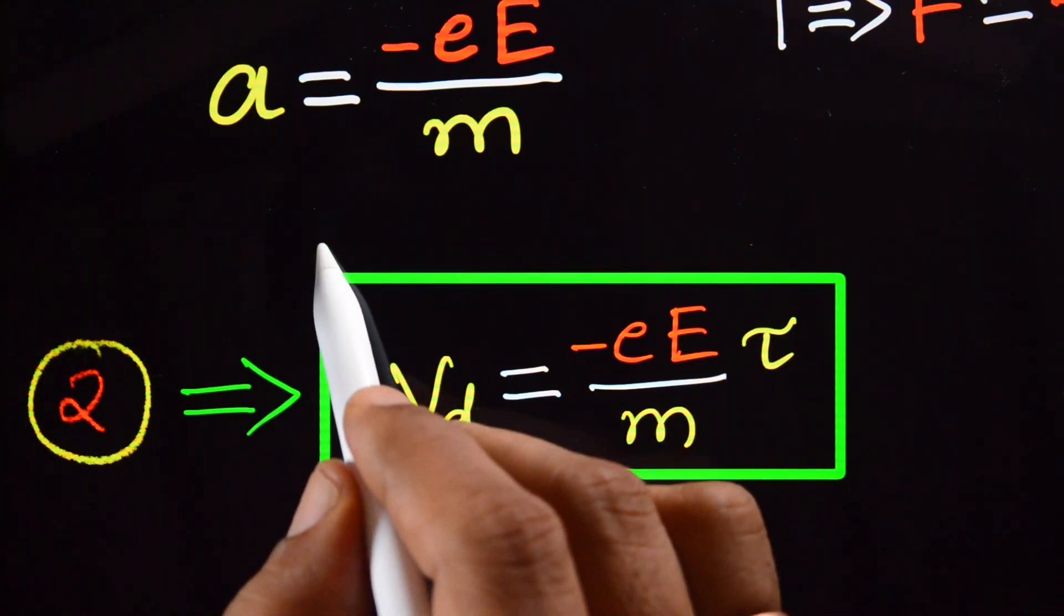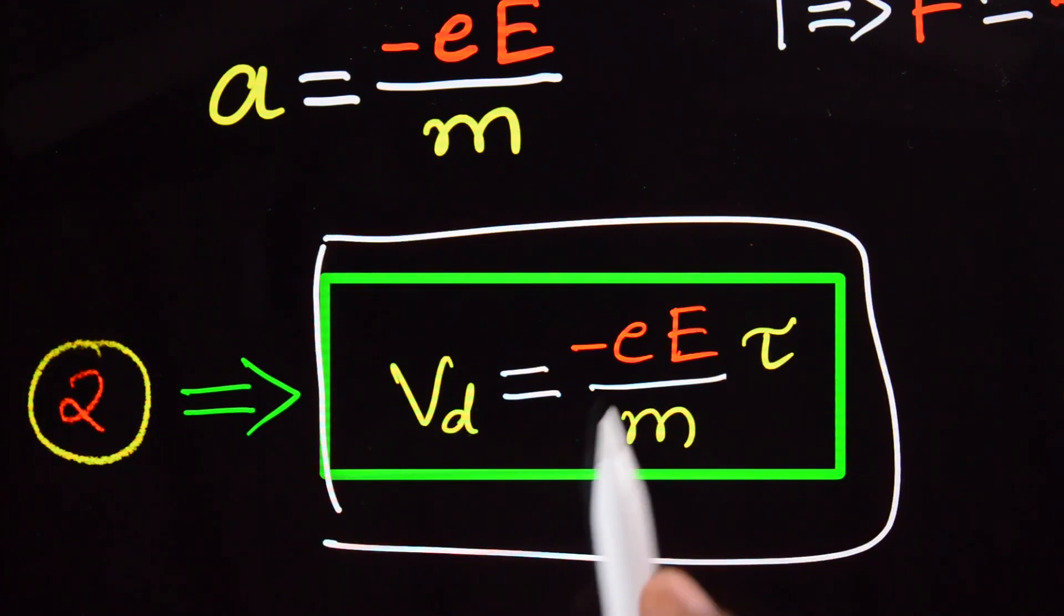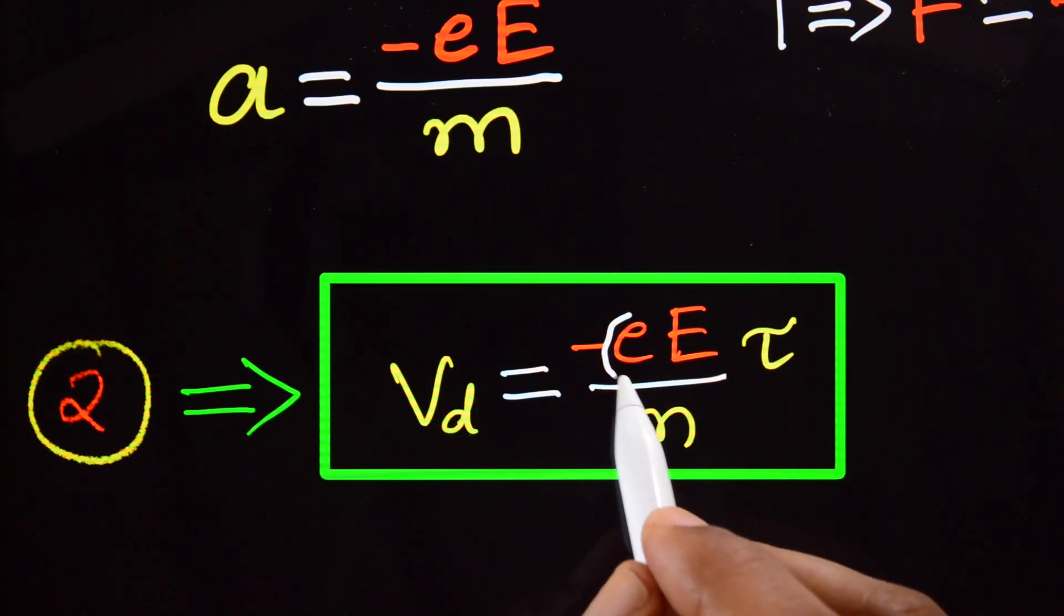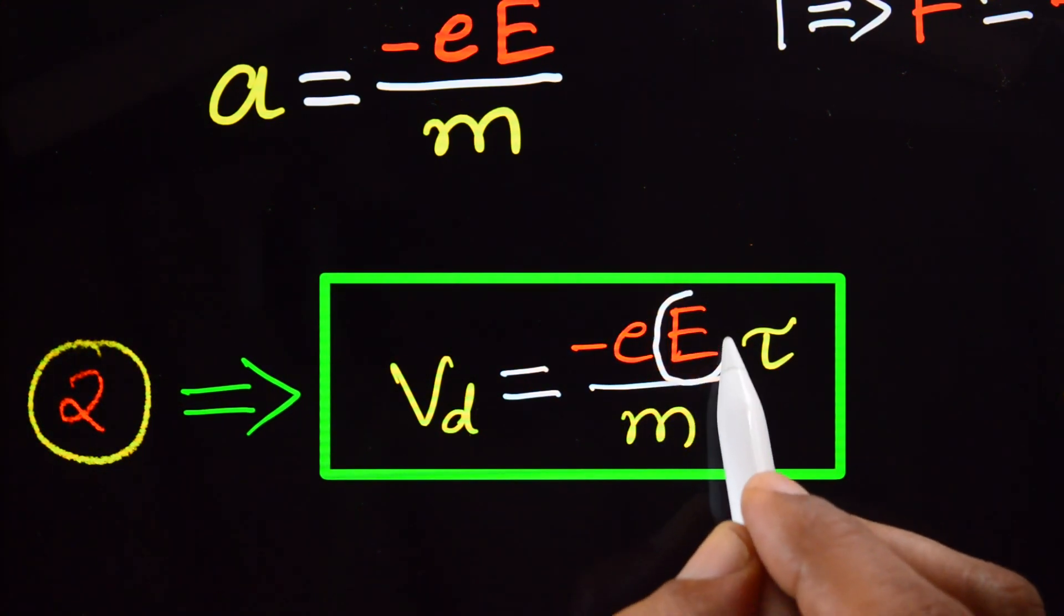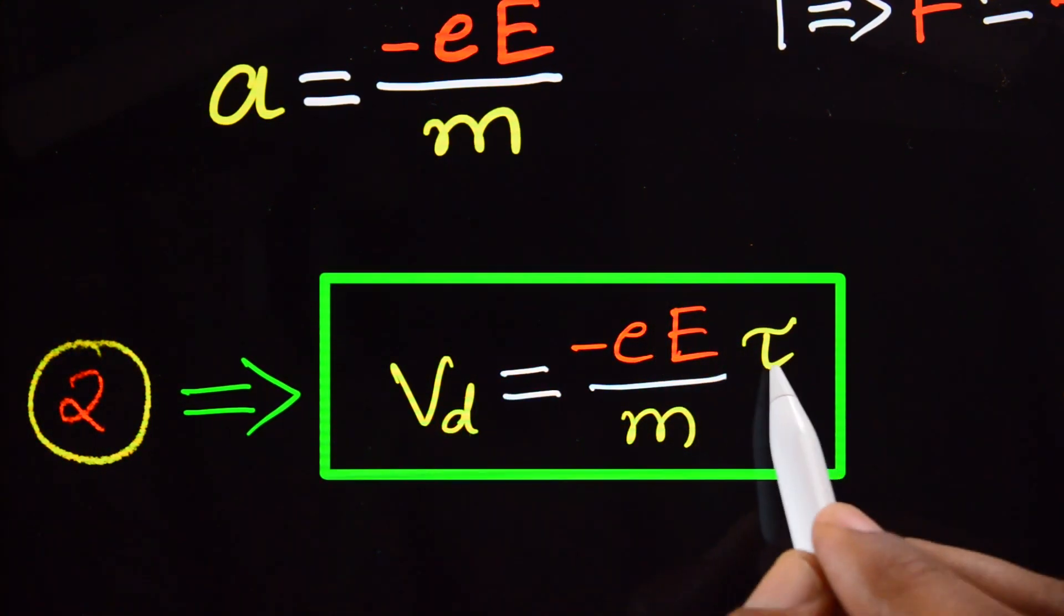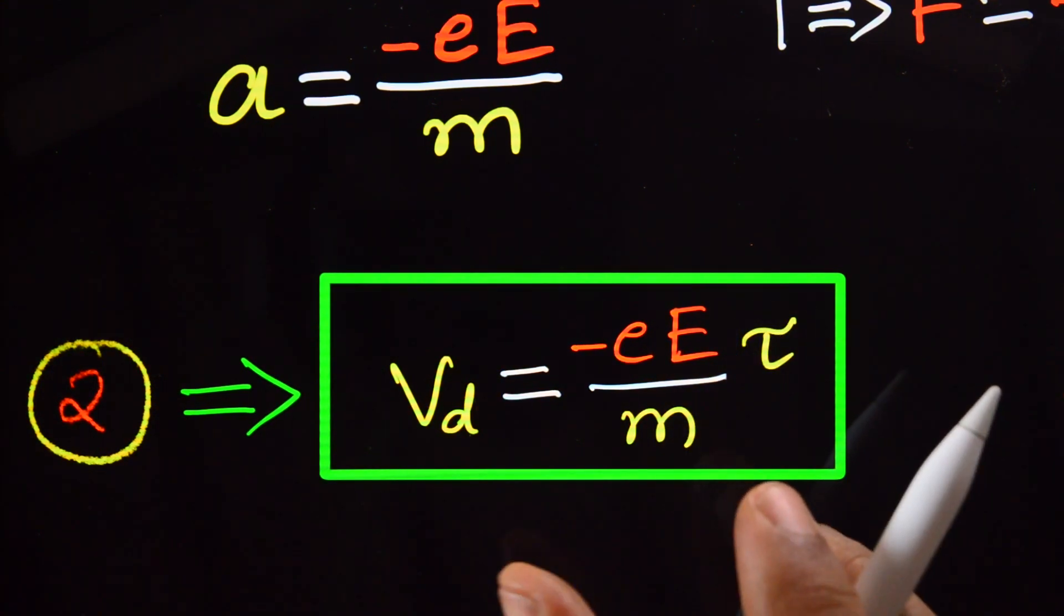This is the expression for drift velocity. What is e here? e is the charge on electron, capital E is the electric field, tau is the relaxation time, and m is the mass of the electron.